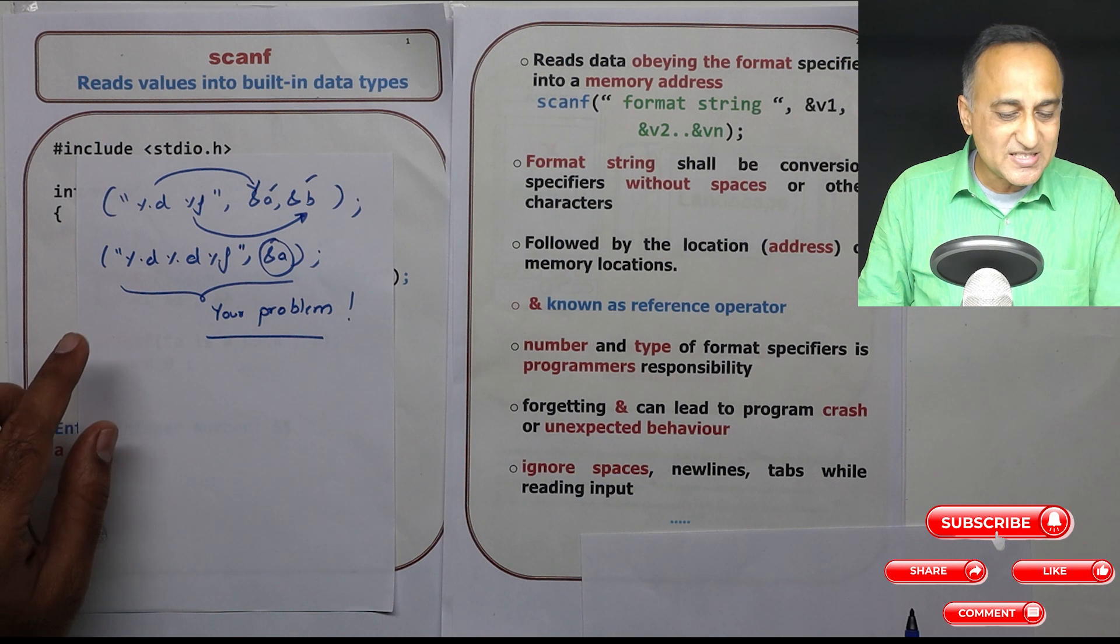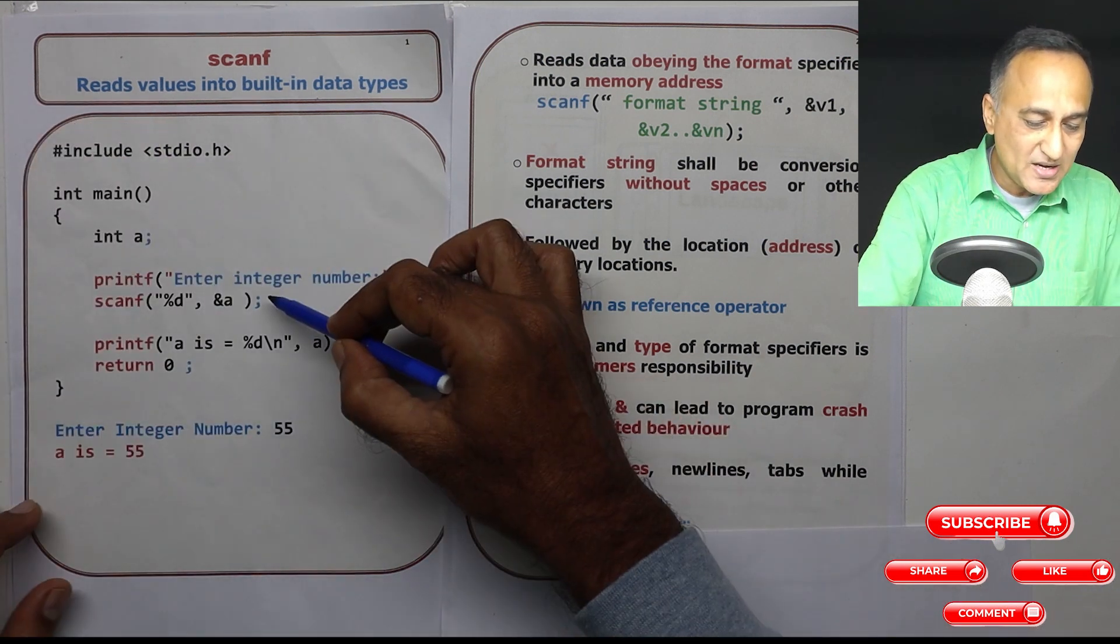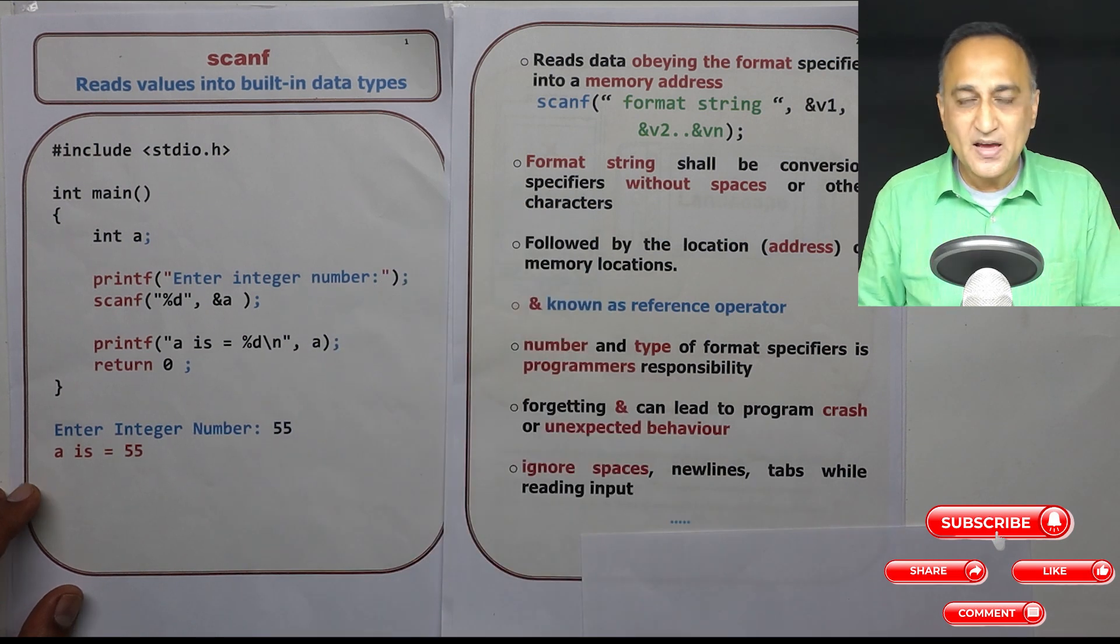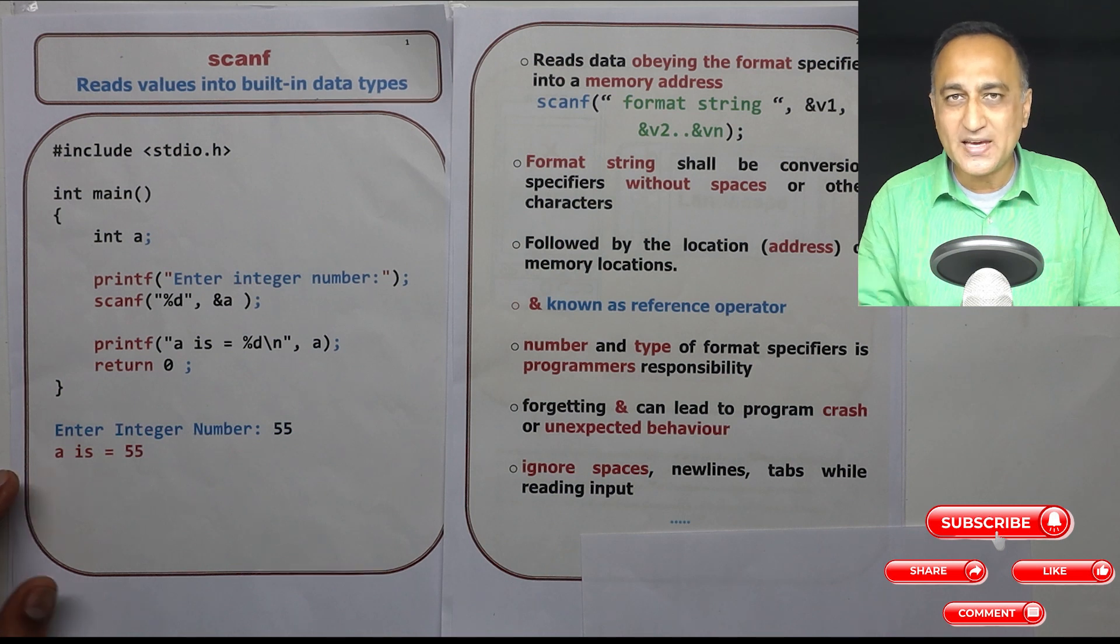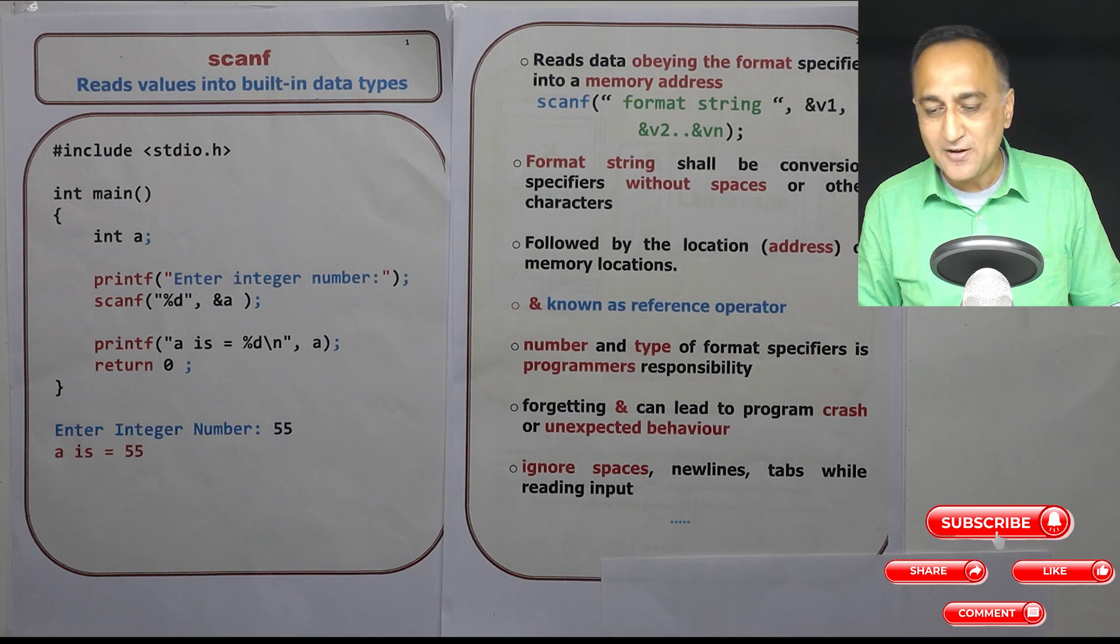Now suppose when I'm using scanf, when this data 55 is being entered, I can hit as many spaces, tabs, newlines - all those characters will be ignored. Only when I enter a number, that value will go into 55.